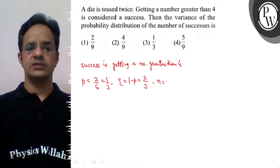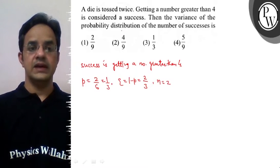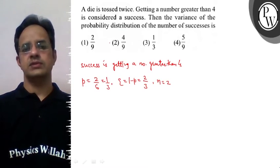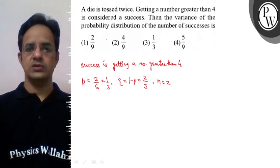And the number of trials is 2. Now, the variance of the probability distribution of the number of successes.